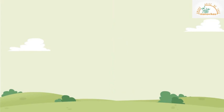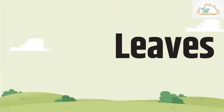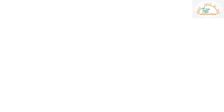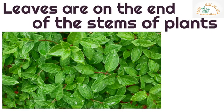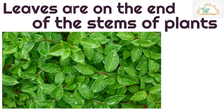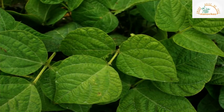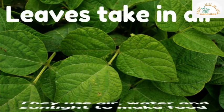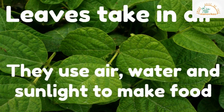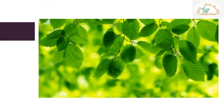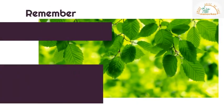The next part of the plant we are going to learn about are leaves. The leaves are on the end of the stems of a plant. Leaves are where plants make most of their food — leaves take in air, and they use air, water, and sunlight to make food. Remember: leaves are on the end of the stems.